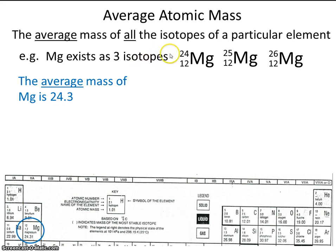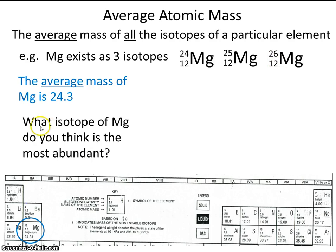These three isotopes have a mass of 24, 25, and 26. So I have a question for you. What isotope of magnesium do you think is the most abundant?